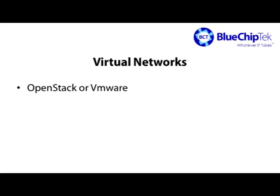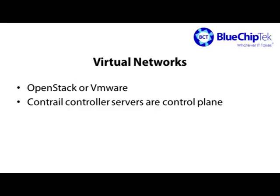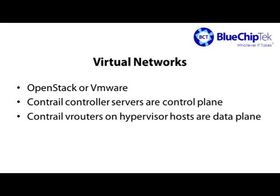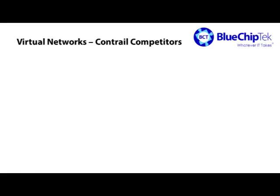Contrail can power virtual networks for both OpenStack and VMware. In either case, the three Contrail controller servers provide the control plane for the virtual network — they're where you would go to create new networks, define network policies, and set the rules for how networks either do or don't interact. A virtual router component then runs on each hypervisor host and functions as the data plane.